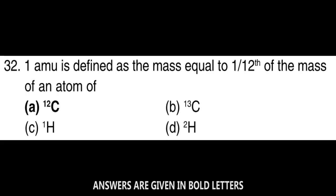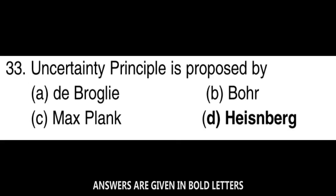Next question: One atomic mass unit is defined as a mass equal to one-twelfth of the mass of an atom of carbon-12. Next question: Uncertainty principle was proposed by Heisenberg.